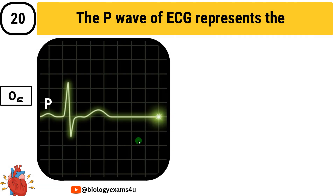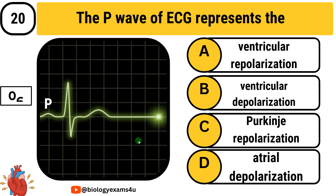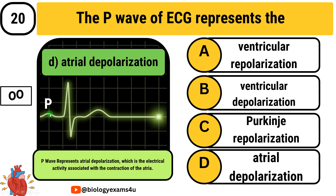Question number 20 (final question): The P wave of an ECG represents — Option A: ventricular repolarization. Option B: ventricular depolarization. Option C: atrial repolarization. Option D: atrial depolarization. The answer is atrial depolarization. The P wave represents atrial depolarization, which is the electrical activity associated with the contraction of the atria.